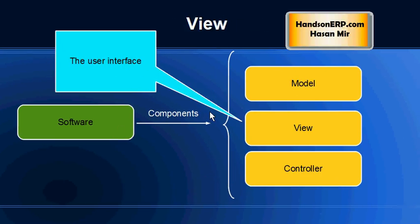The View Component is the presentation layer. It has all the information on what to display on the screen — what would be the colors, what would be the layout, how many fields, and so on. So the View Component is basically the presentation layer.